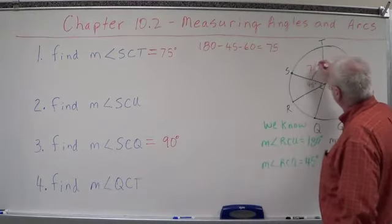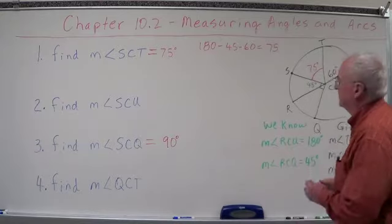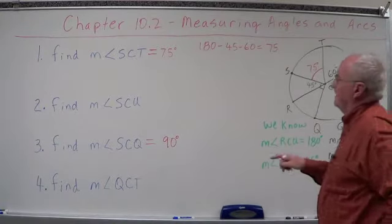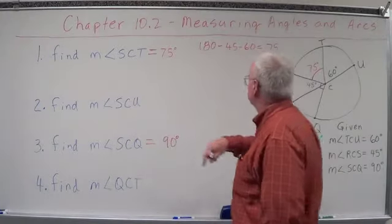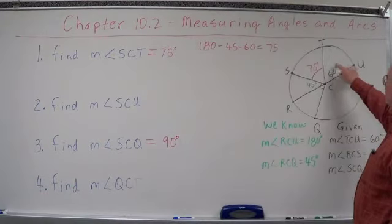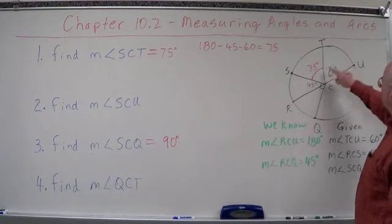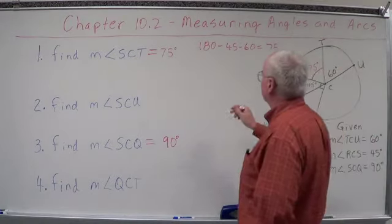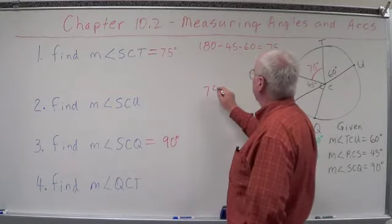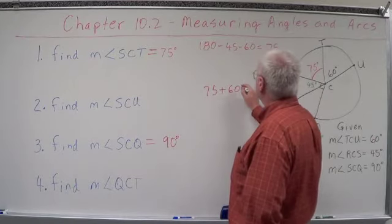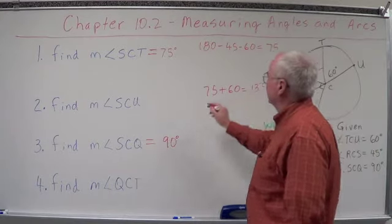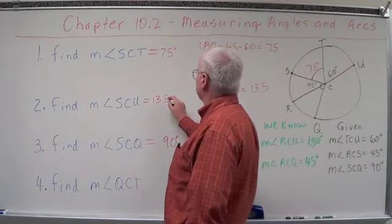I'm going to go ahead and write that on here, 75 degrees. Now let's look at find the measure of SCU. Well, the measure of SCU is just simply going to be the measure of SCT plus the measure of TCU. Angle addition postulate, so we've got 75 plus 60 equals, add those two together, so that's 135. So this here would be 135 degrees.